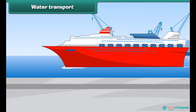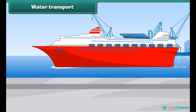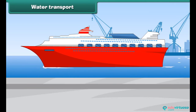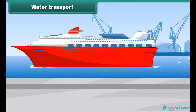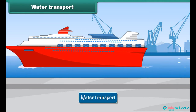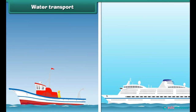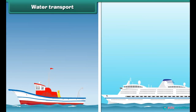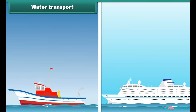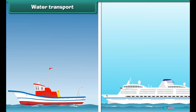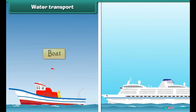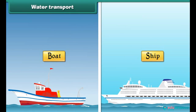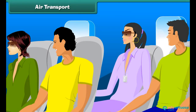The movement of goods and passengers on water is called water transport. Goods and passengers are carried from one place to another, both within and outside the country, by means of boats and ships.